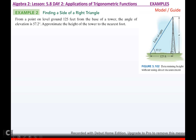From a point on level ground 125 feet from the base of a tower, the angle of elevation is 57.2 degrees. Approximate the height of the tower to the nearest foot. From that angle, the opposite side is the height and the adjacent side is 125 feet. The function that uses opposite and adjacent is tangent. So I set up tan(57.2) equals opposite, which is a, over adjacent, which is 125.